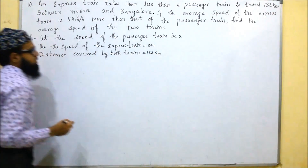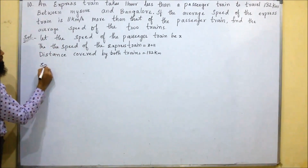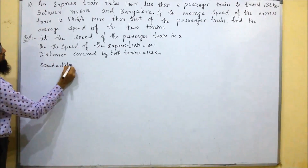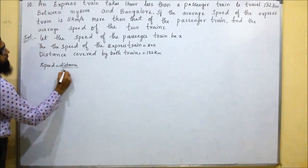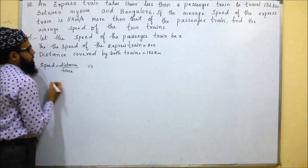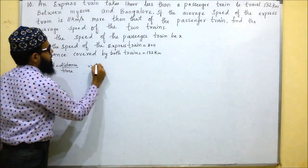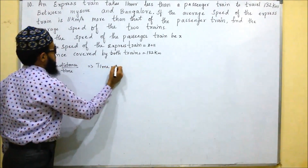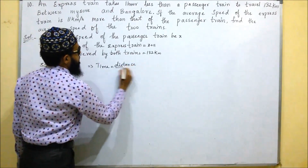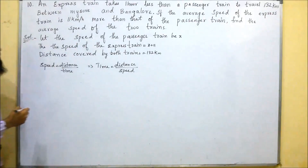According to this problem, we know the formula of speed: speed equals distance divided by time. We can rearrange this — time goes to the numerator — and we get time equals distance divided by speed.